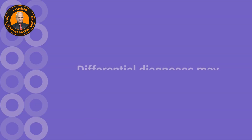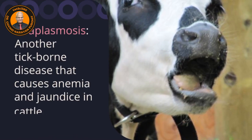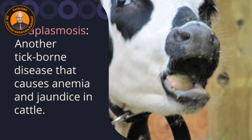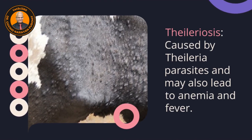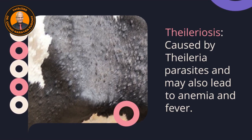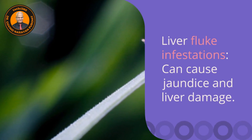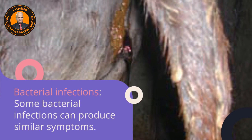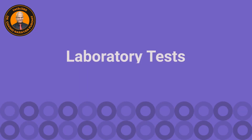Several diseases can present with clinical signs similar to babesiosis in cows and should be differentiated from it. Differential diagnoses include anaplasmosis, another tick-borne disease that causes anemia, jaundice, and sometimes fever and coughing. Theileriosis, caused by Theileria parasites, may also lead to anemia, fever, skin eruptions, and enlargement of the lymph nodes. Liver fluke infestations can cause jaundice and liver damage, and bacterial infections like bacillary hemoglobinuria can produce similar symptoms.